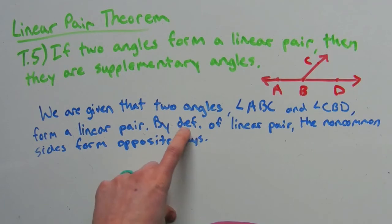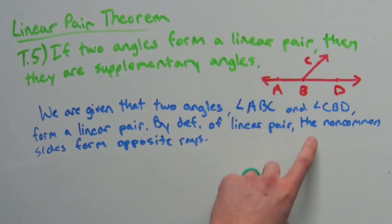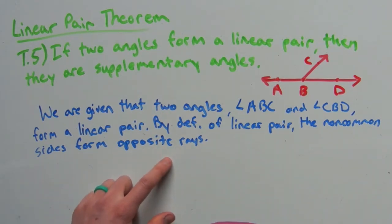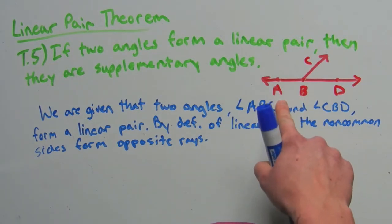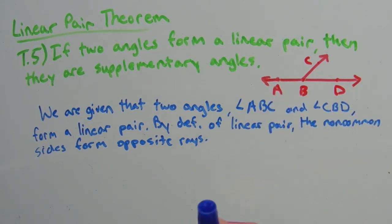By definition—DEF period is my shorthand for definition—so by definition of linear pair, the non-common sides form opposite rays. So BA and BD would be the opposite rays.